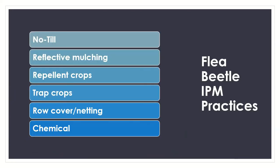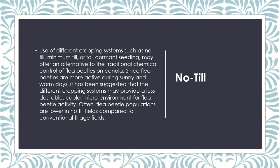Some practices we've found include no-till, reflective mulching, repellent crops, trap crops, row covering and netting, and chemical applications. With no-till, using different cropping systems such as no-till, minimum-till, or fall dormant seeding creates a cooler microclimate and has been found to lower leaf beetle populations compared to conventional tillage fields. Some of our producers tried this and didn't notice big differences themselves, but there is some research out there that suggests it may be worth trying.